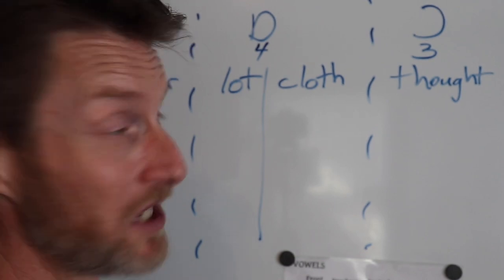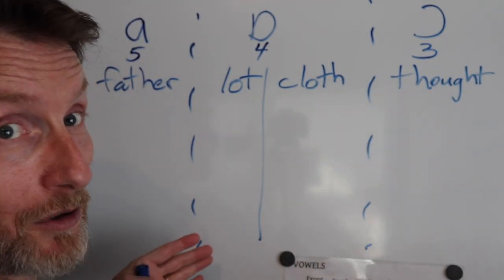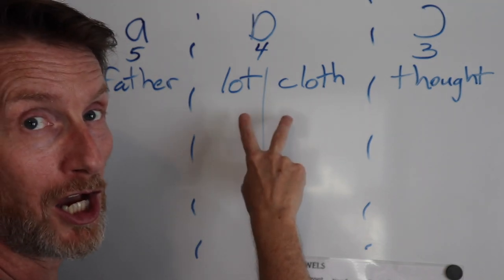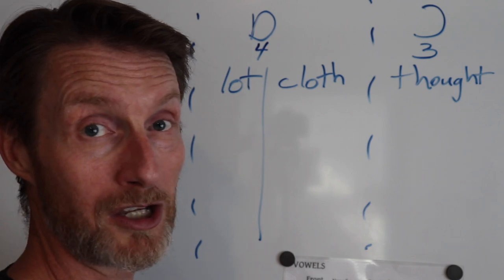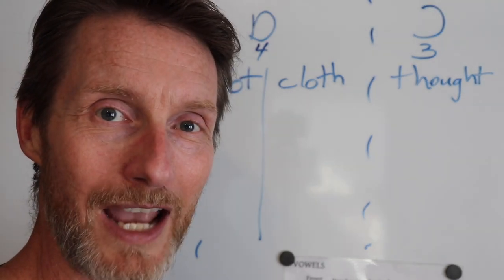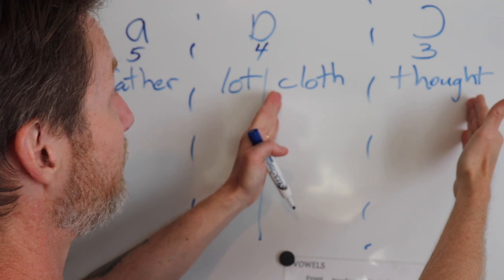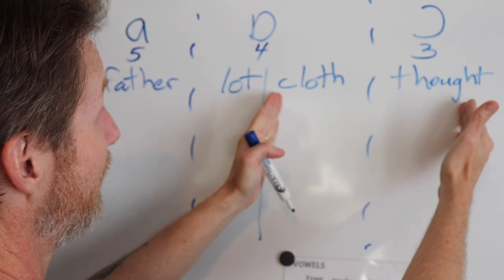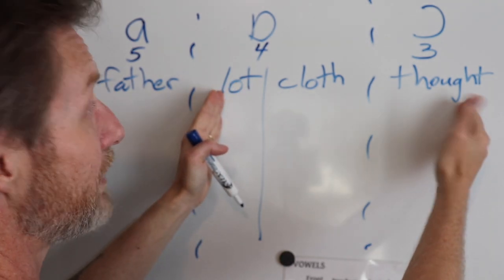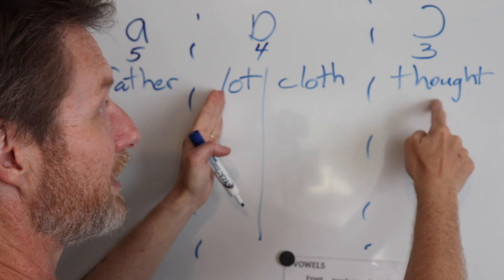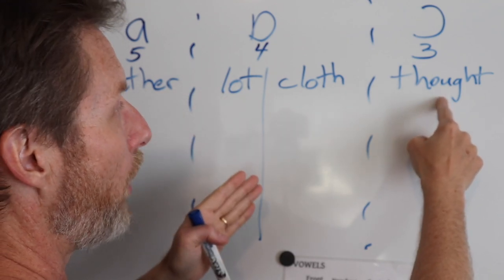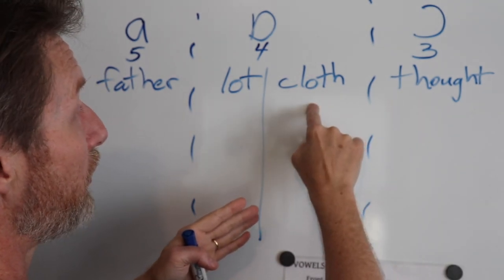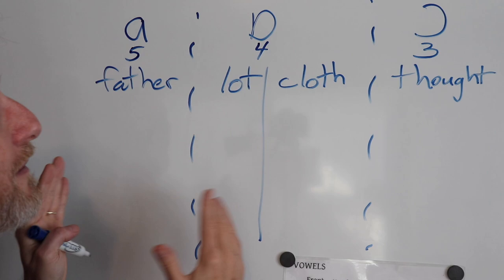Whereas in Boston, you actually get the three categories. You'll get father, lot, cloth, and then their thought doesn't round as much as it does for a New Yorker. Whereas a New Yorker will lump these together. So a Boston person, these two will sound similar, but also a little bit like this, because they don't round this as much. Whereas a New Yorker rounds this even more, thought, cloth, in Boston, thought, cloth, lot, father.